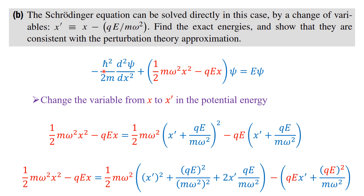For the harmonic oscillator, the Schrödinger equation is: -ħ²/(2m) · d²ψ/dx² + [½mω²x² - QEx]ψ = Eψ. The kinetic energy term is the first part, and the potential energy includes both the harmonic term and the perturbation -QEX from Part A.